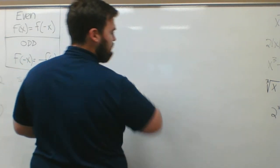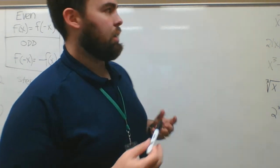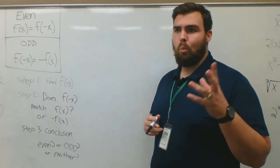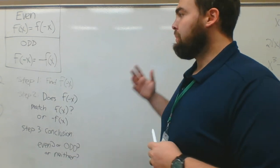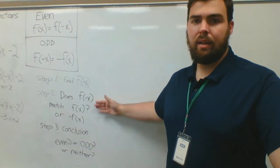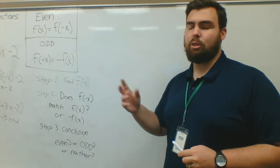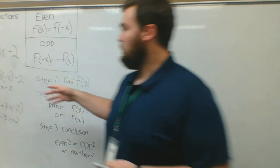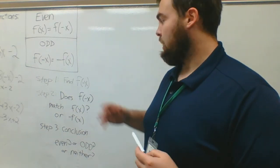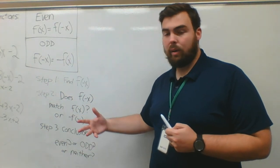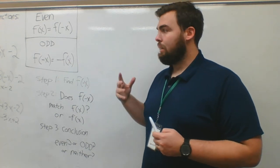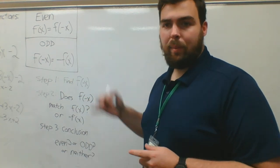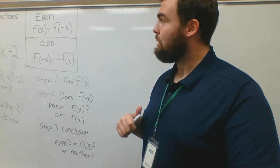That pretty much covers odd and even in terms of all the things you could possibly see and all the things that could try to trick you. Just make sure that when they ask you to find a step that's incorrect, you're paying close attention to what they're doing — whether it's an algebra error or whether they're plugging in x correctly and determining even or odd correctly. Follow all your rules and it'll kind of take care of itself for those types of problems. If you have any questions, email me. 7.4.